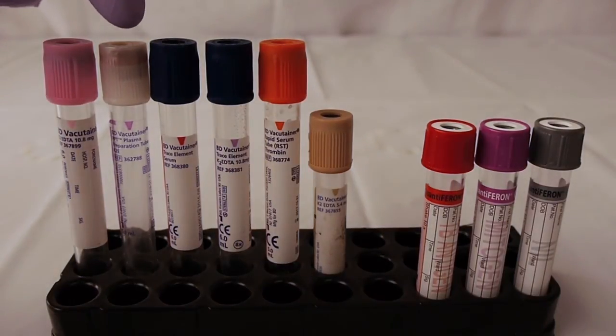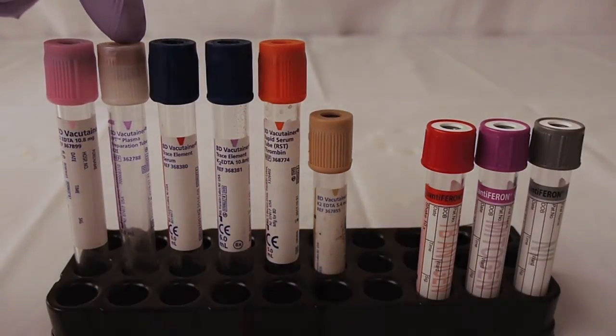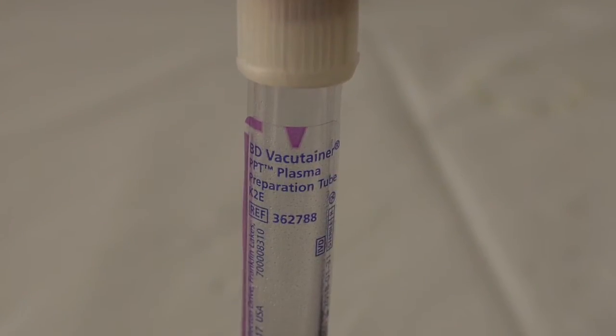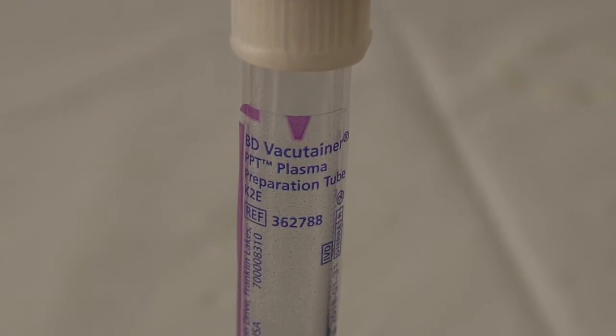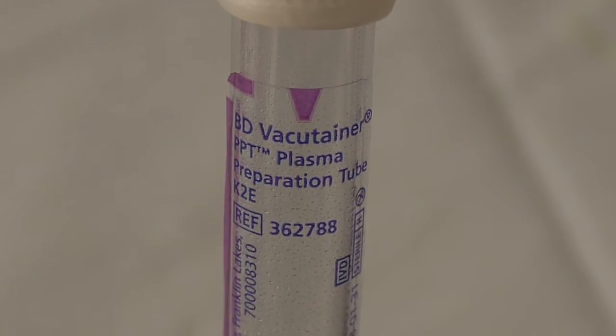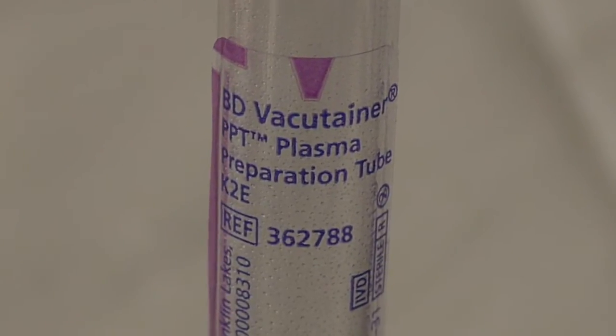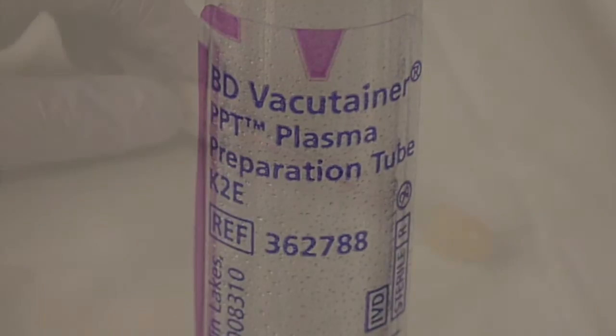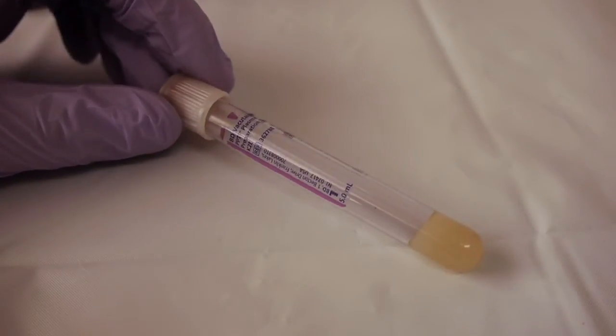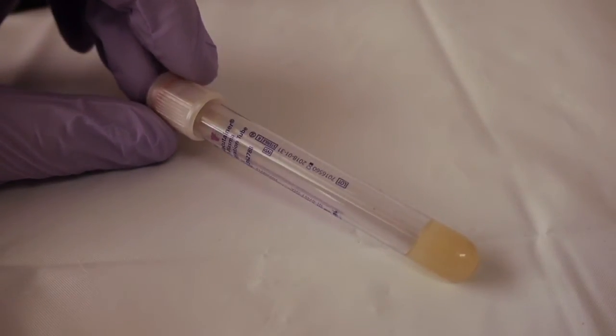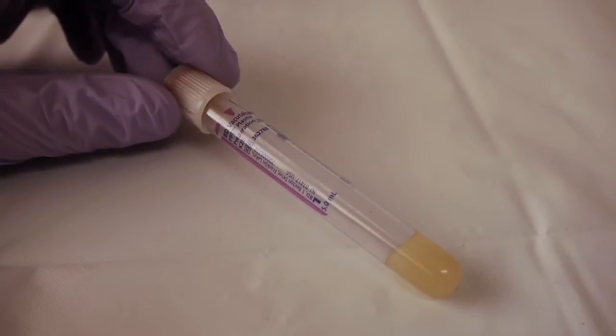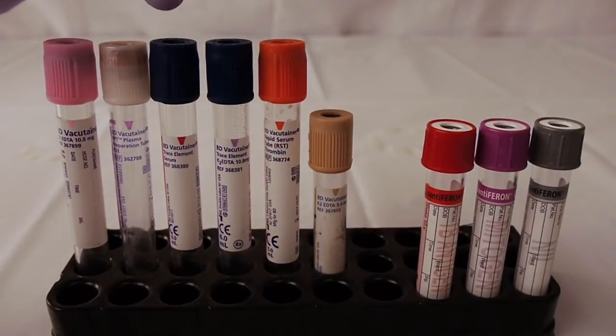The next tube that we have is the Pearl, also known as the Pearl White. This tube has EDTA. It is known as a PPT or Plasma Preparation Tube. This tube has a gel barrier, and it is used for DNA.